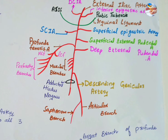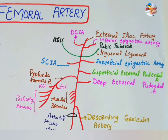The superficial external pudendal artery supplies the skin of the external genital organs. The superficial epigastric artery supplies the skin and fascia of the lower part of the anterior abdominal wall, and the superficial circumflex iliac artery supplies the skin along the iliac crest.